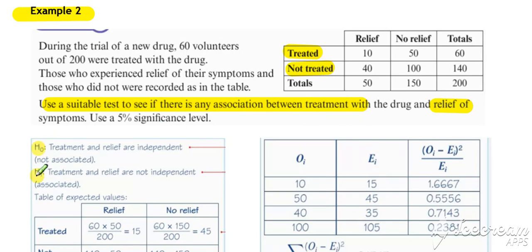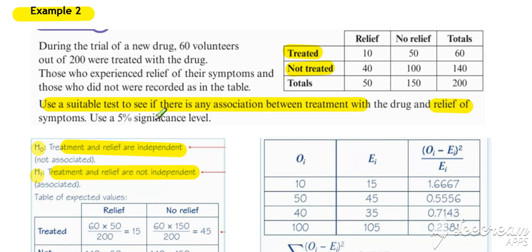For the null and alternative hypotheses: the null is that treatment and relief are independent — it's always that way around — and the alternative is that treatment and relief are not independent, meaning there's an association. The wording refers to the alternative hypothesis, but it's the null hypothesis we're testing, which is always for independence or no association.